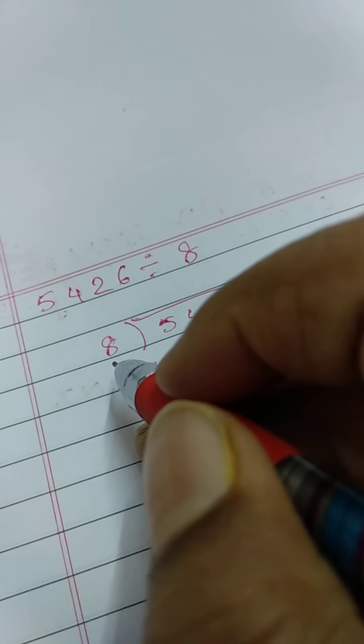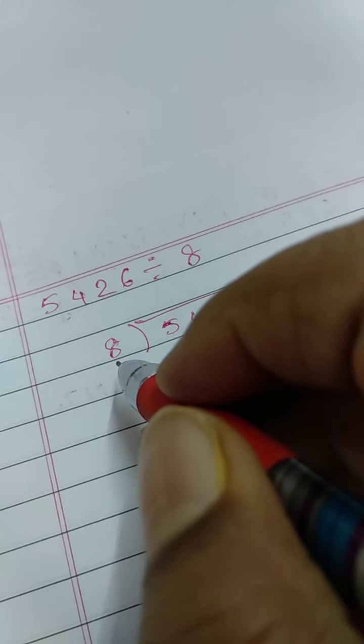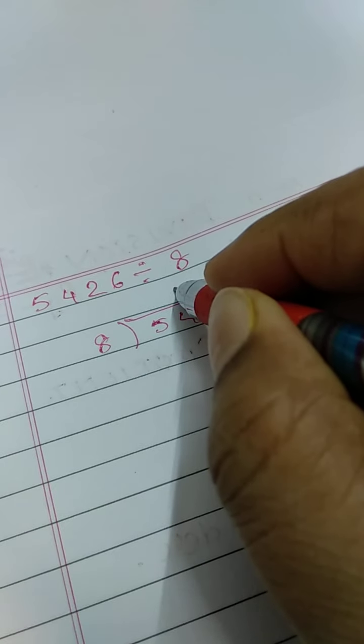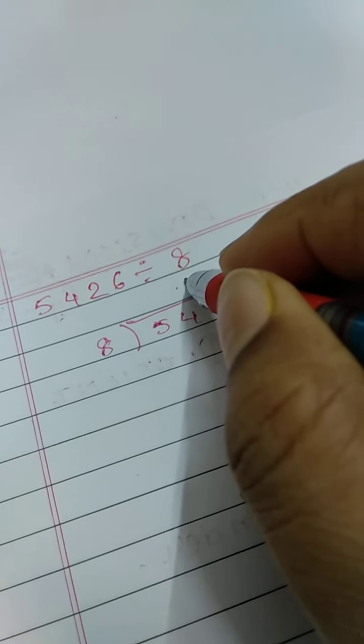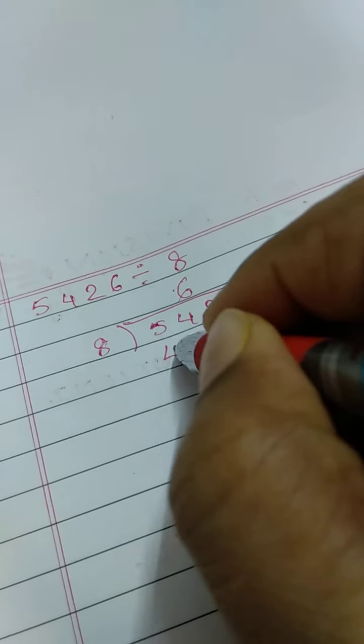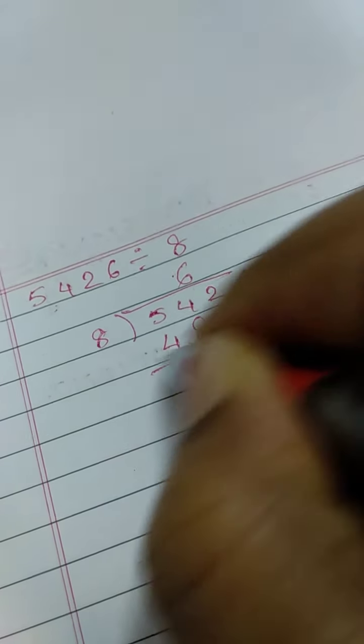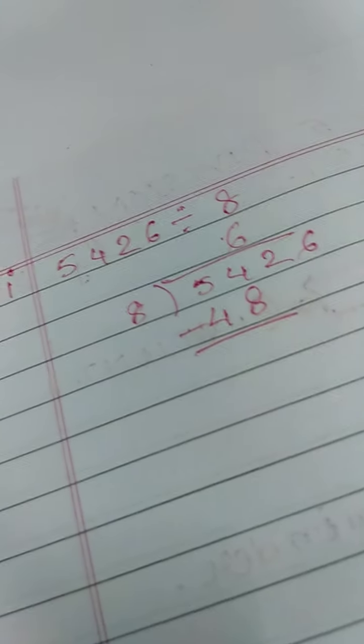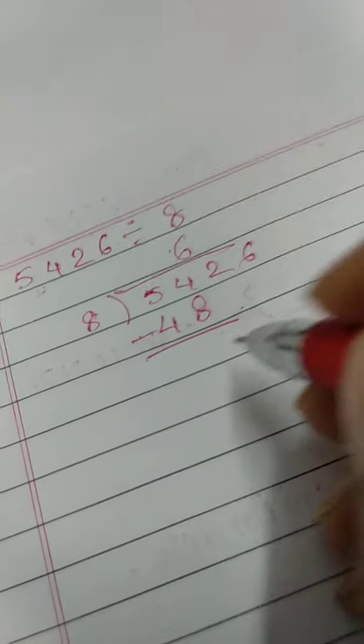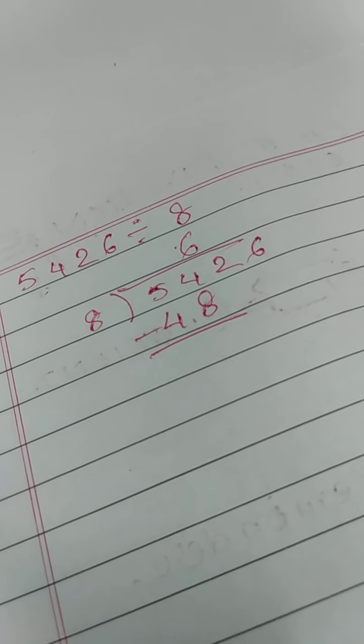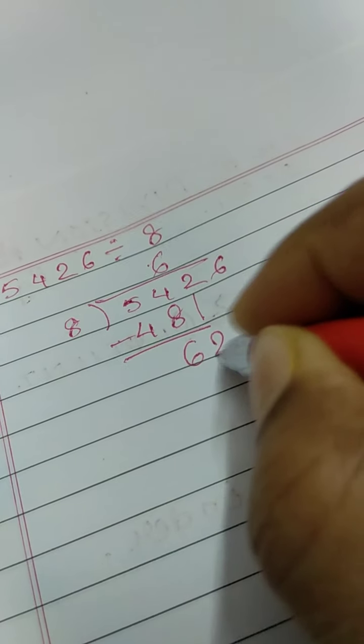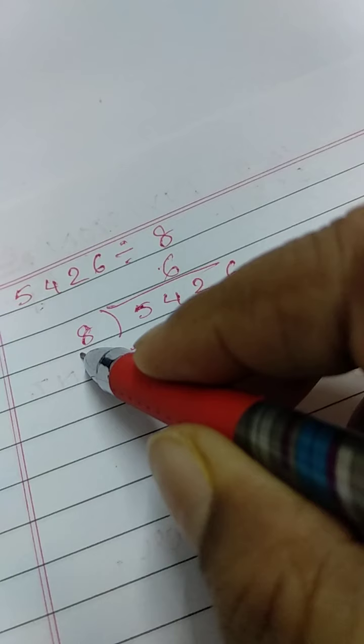So 56 is bigger. So 8 times 6 is 48. So I write 6 here, 48 here. After subtraction, I will get 6. I am bringing down 2. Again I will read out the multiplication. 8 times 8 is 64. Again 8 times 8 is 64, that is bigger than 62.